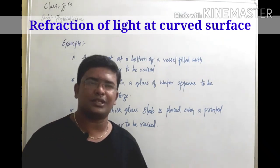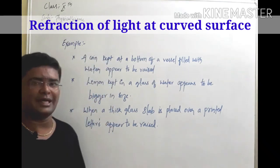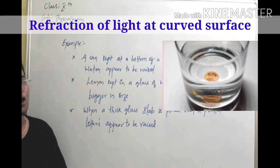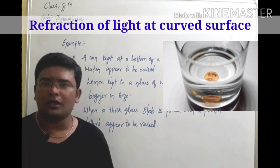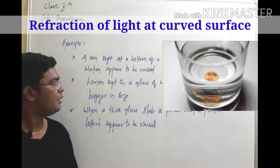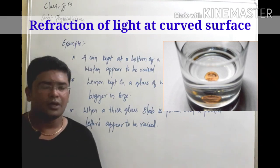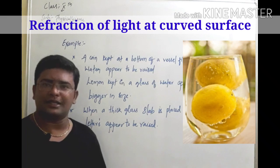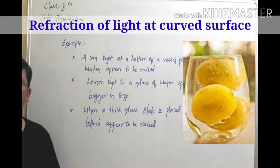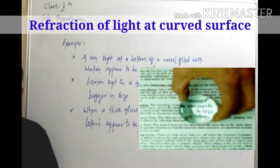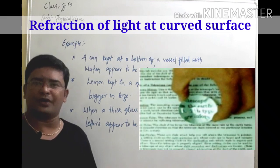Before we start the chapter, let us look into some examples. The first one: a coin kept at the bottom of a vessel, when it is filled with water, appears to be raised — you can see from the picture. Second example: a lemon kept in a glass of water appears to be bigger in size than its original.